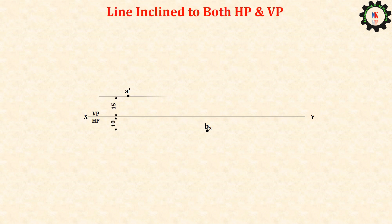Draw the locus line from A dash and similarly from B2 also. From a dash draw a line with true length which is inclined at 30 degrees to HP.